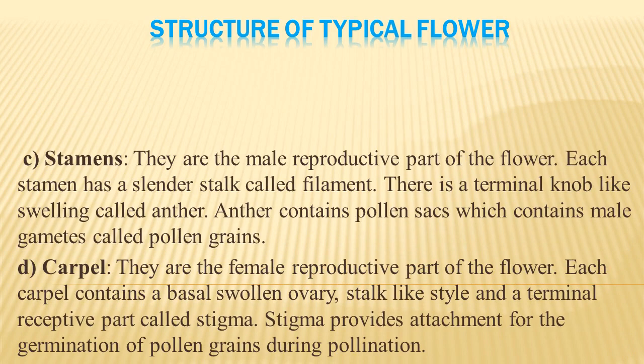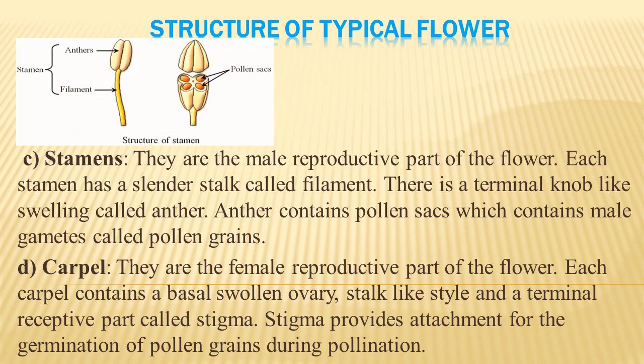Stamens are the male part of the flower. Each stamen contains two important components: the filament and the anther. The filament is a slender stalk-like structure, and at the terminal part of the filament there is a knob-like swelling known as the anther. This anther contains pollen sacs which contain the male gamete known as pollen grains, as you can see in the image.